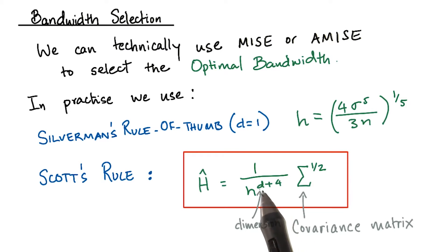This shows you the formula to obtain the general bandwidth in d dimensions. For one-dimensional case, we put d equals 1. In this case, the sigma here shows the covariance matrix in the d dimensions of the data.